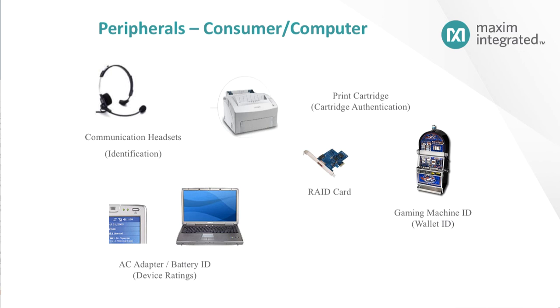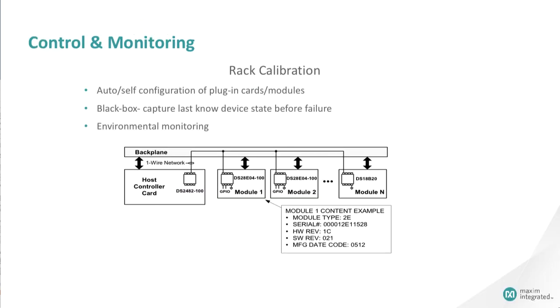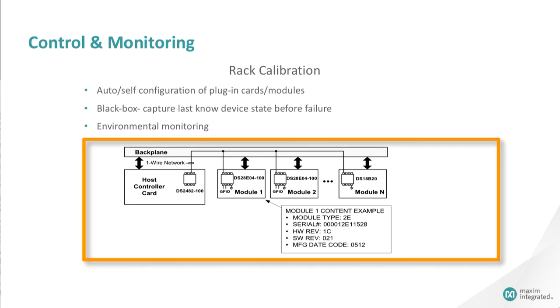Another application is multi-rack and multi-card systems. This image shows a controller card and multiple dumb cards with each dumb card having a one-wire device embedded. Further, in case of a local card failure, you could still talk to the one-wire device parasitically and identify the chain of events that lead to the failure, similar to a black box recorder.